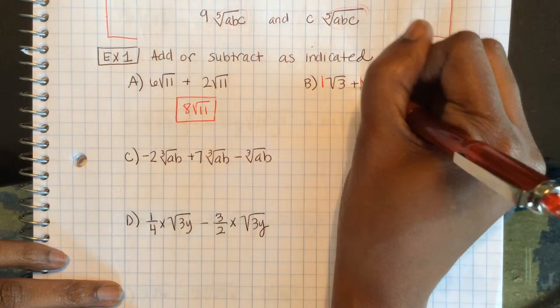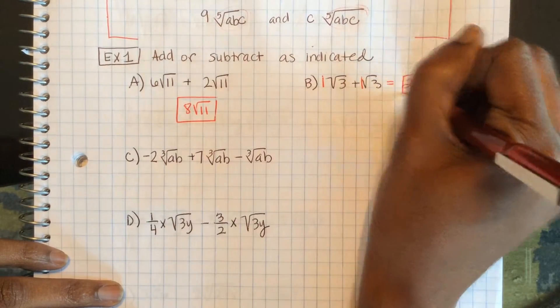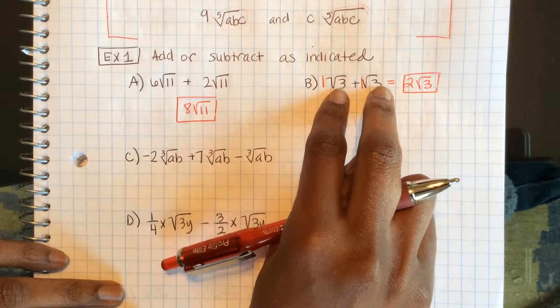1 square root 3 plus 1 square root 3 is 2 square root 3s. Treat the radical as your variable.